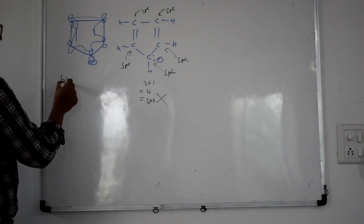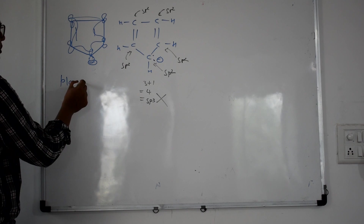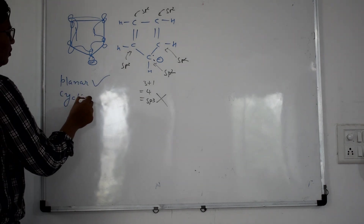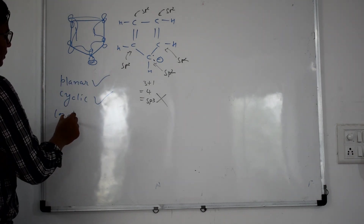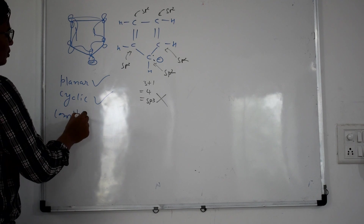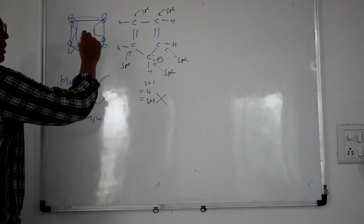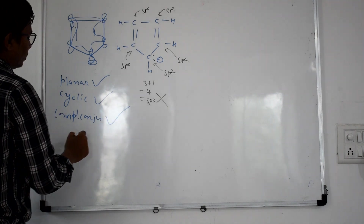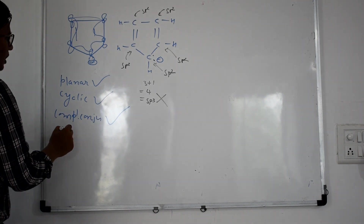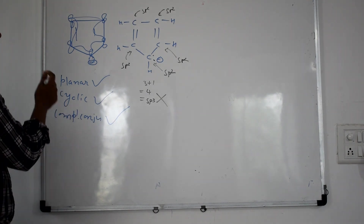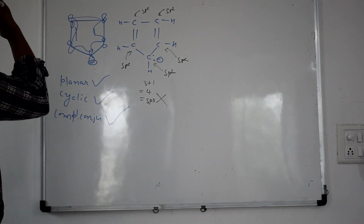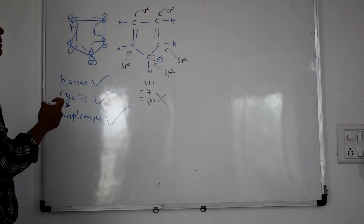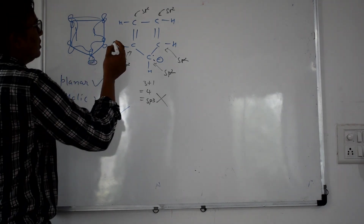Is the molecule planar? Yes, it is planar. Is it cyclic? Yes, it is cyclic. Is it completely conjugated? Every atom in the ring is sp2 hybridized, so it is completely conjugated. Now, how many pi electrons are there? Electrons in the p orbitals are considered the pi electrons.